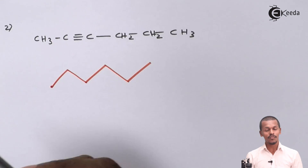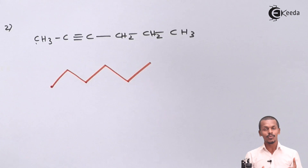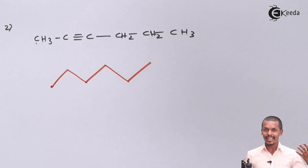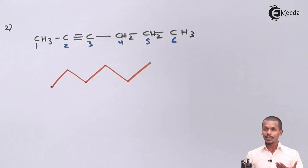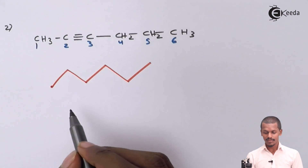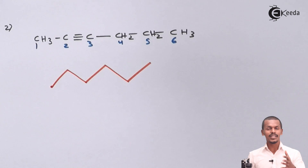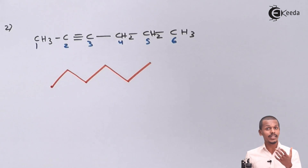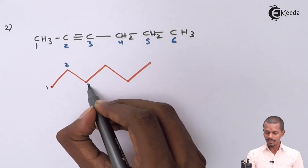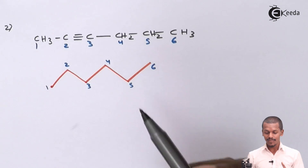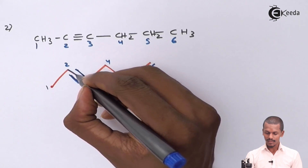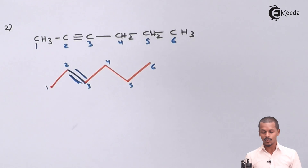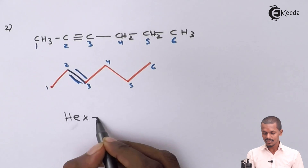For the bond line formula, we draw 6 carbon atoms in a straight chain. Numbering from the end nearest the triple bond: carbon 1, 2, 3, 4, 5, 6. The carbon-carbon triple bond is between carbon number 2 and carbon number 3. The IUPAC name is hex-2-yne.